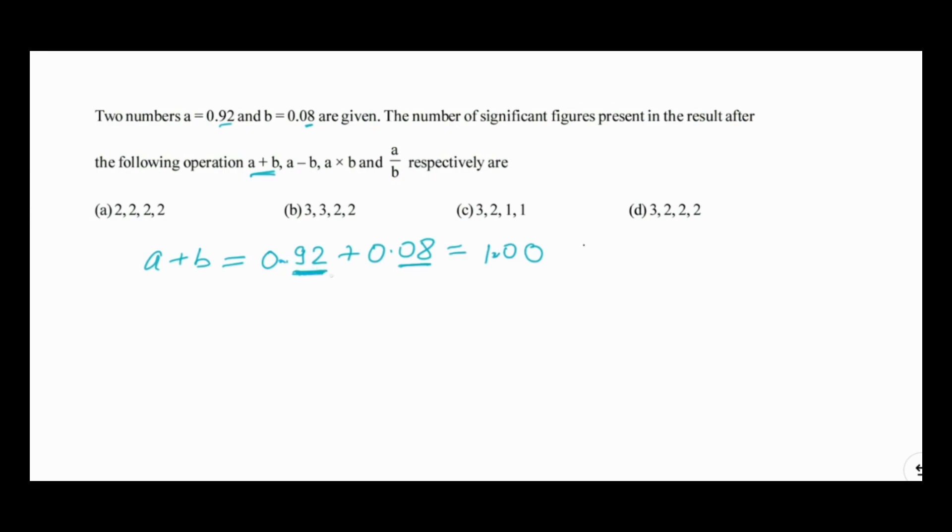By the rules of significant digits, since both numbers have two digits after the decimal, the final result should also have two digits after the decimal. Therefore, the total significant digits in A plus B is three. 1.00 has three significant digits. So A plus B should be represented using three digits. Options C and D both show A plus B as three digits, so these could be correct.